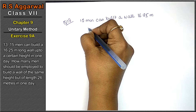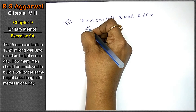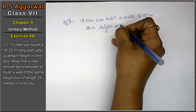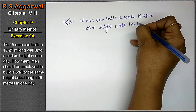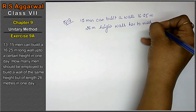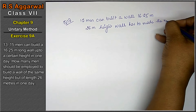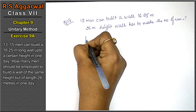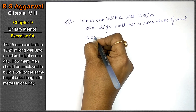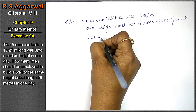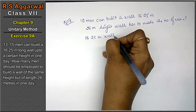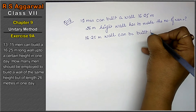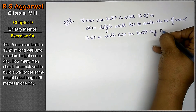So, the number of men required if a 26-meter wall has to be made — that is what we have to find out. So, a 16.25-meter wall can be built by 15 men.